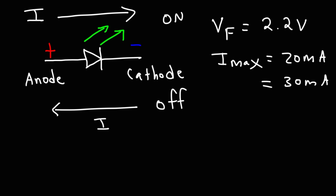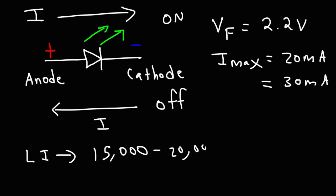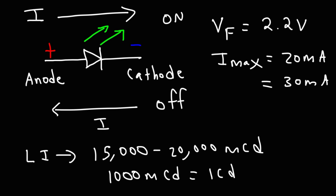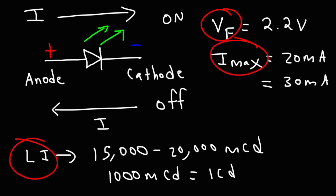If you apply a higher current, the LED could burn out, or it may work for some time and then burn out later, depending on the magnitude of the current. The next thing is the luminous intensity, which tells you how bright the LED will be. The LED I was using earlier had a luminous intensity between 15,000 and 20,000 millicandelas — and 1,000 millicandelas is equal to 1 candela. So the forward voltage, the maximum recommended current, and the luminous intensity are things you may want to look at when buying an LED.